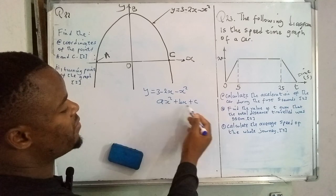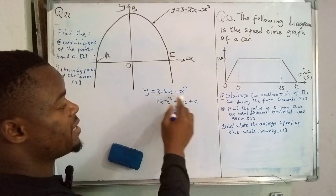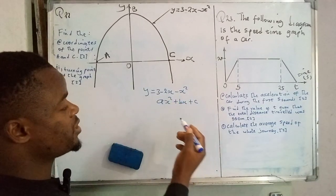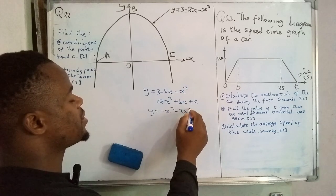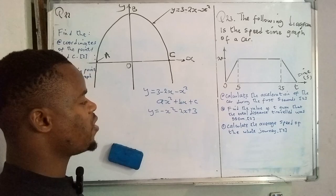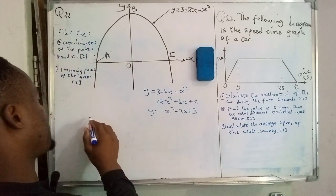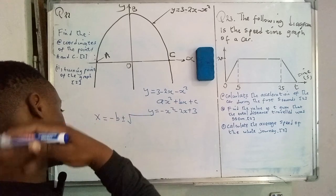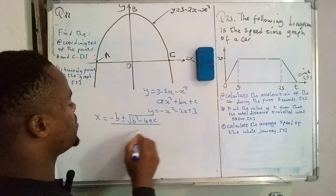When we compare what we have here to the standard form, the terms are not arranged where they ought to be, so we have to rearrange. When you change the positions of terms, the signs won't change. So we will have y = −x² − 2x + 3. Since it's now in standard form, we can resolve the roots using the quadratic formula: x = (−b ± √(b² − 4ac)) / 2a.